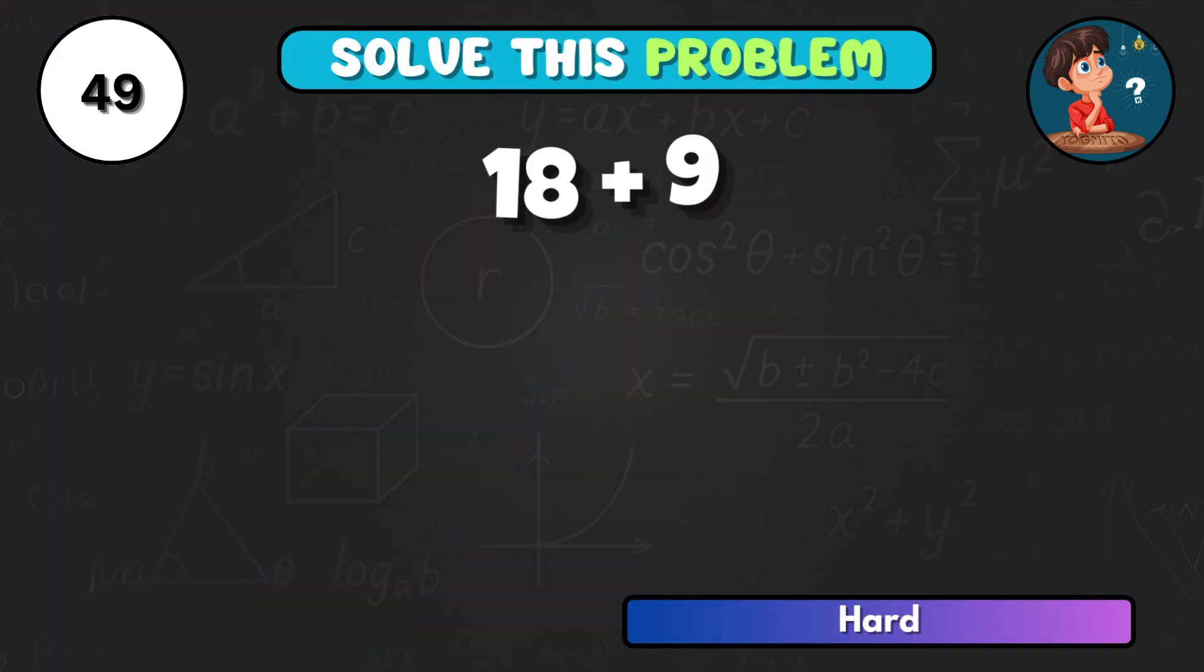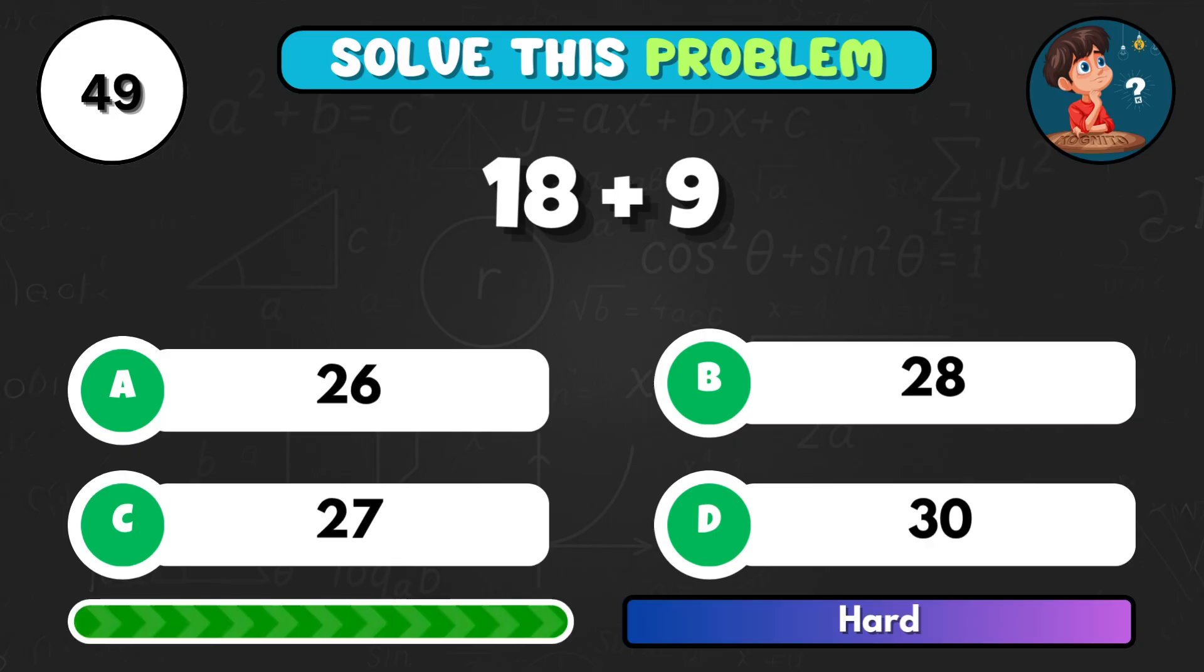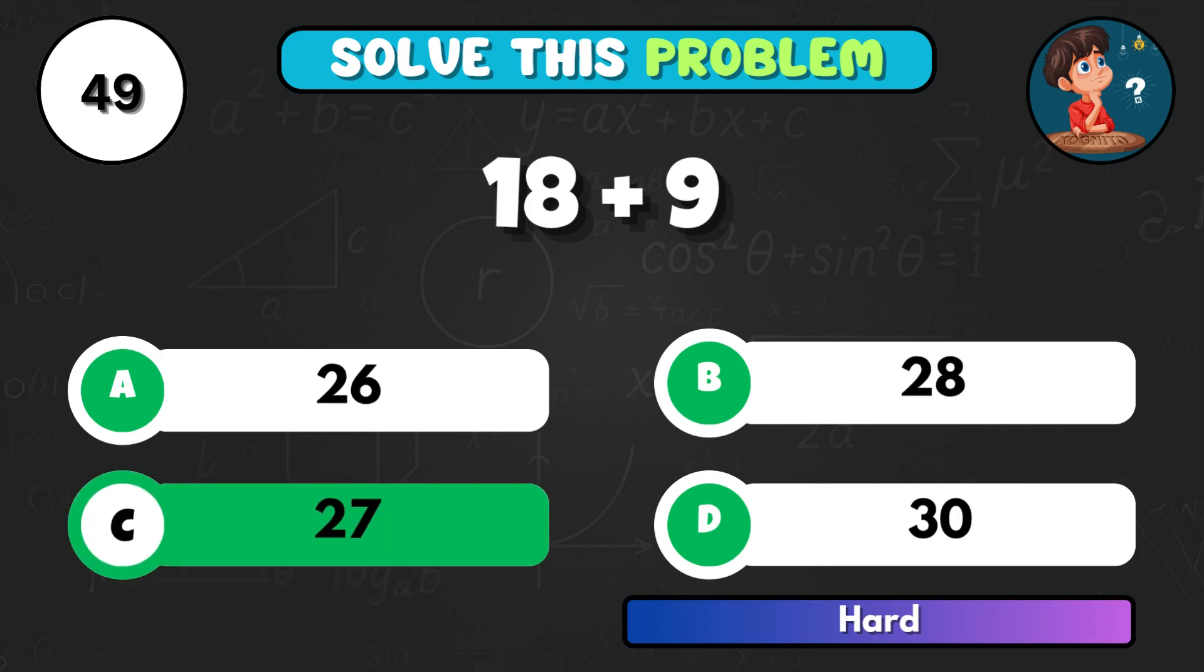18 and 9, add them quickly. That's C, total 27.